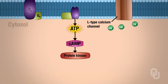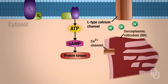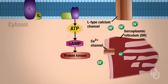Protein kinase can also phosphorylate the calcium channel on the SR. When that happens, that channel is also augmented, which increases calcium influx into the cytosol, which increases the force of contraction. Those are two of the four things that are going to increase the force of contraction and therefore alter contractility.